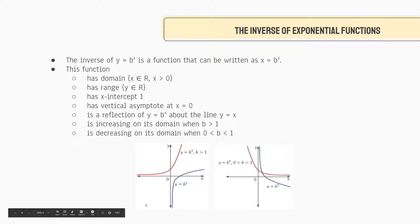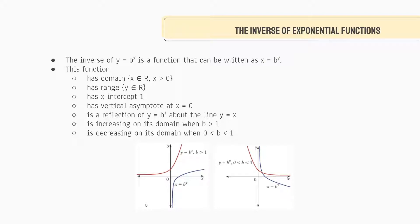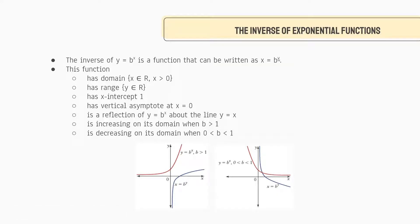Now let's talk about the inverse of the exponential functions. Right now we don't really know how to take the inverse besides just flipping the x and y values. You should have learned in grade 11 that to take an inverse, you simply exchange x for y and then solve. So if our original function was y equals b to the power of x, the inverse would be x equals b to the power of y. With that, we can now analyze this function.